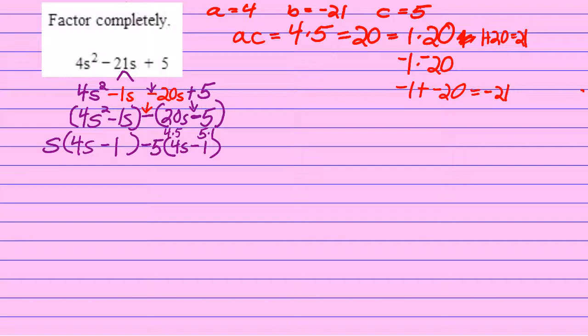Now, looking at the entire polynomial, I see that 4s minus 1 is the GCF of the entire polynomial. So I'll write down 4s minus 1, and then I'll write down the leftovers, which are s minus 5.